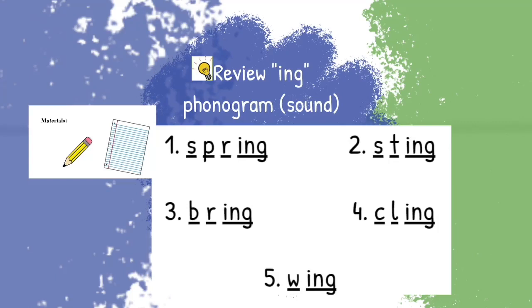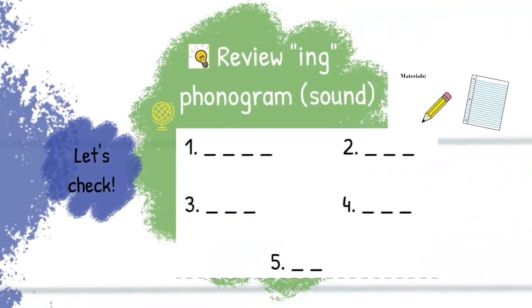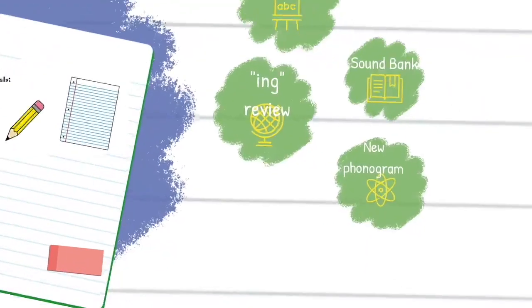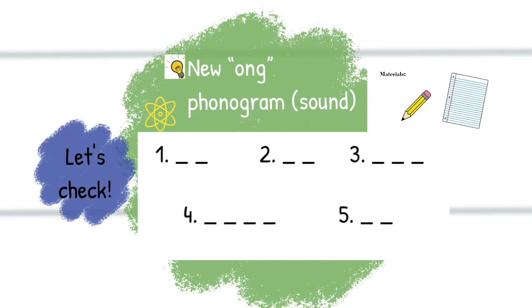That was our new sound last week. Now we are reviewing it and we are ready for a new sound. Ong, O-N-G. Ong. That's our new sound this week. We have five words here. The first word is long. L-ong. How long can you go without blinking? Long. Number two, song. S-ong. Number three, prong. P-r-ong.